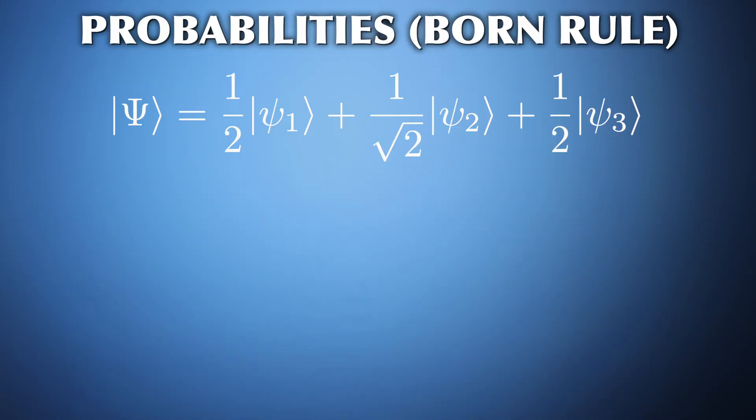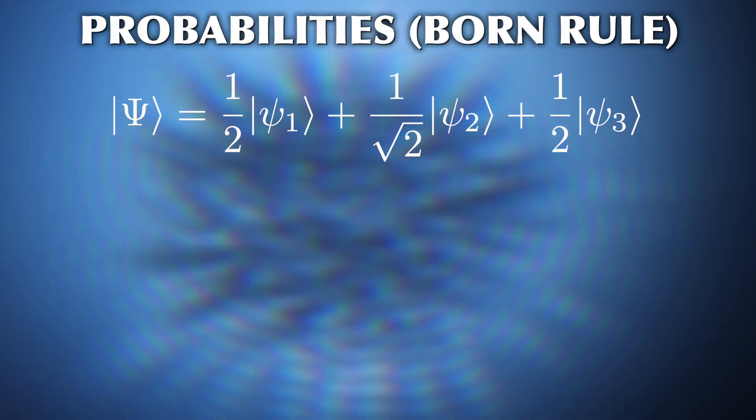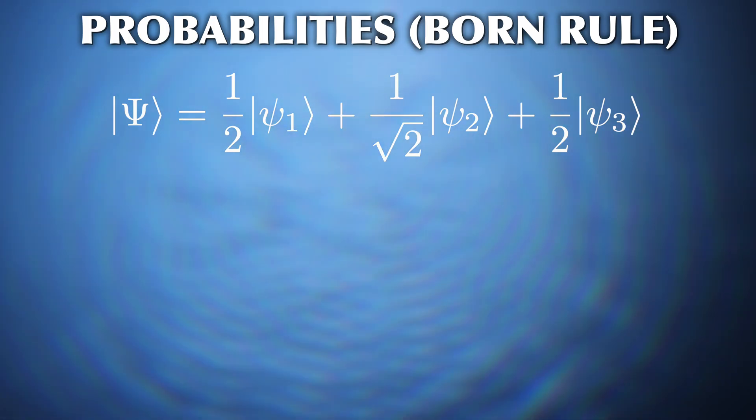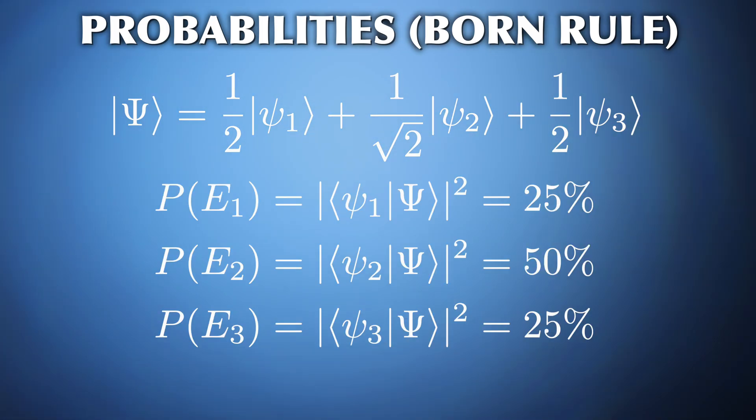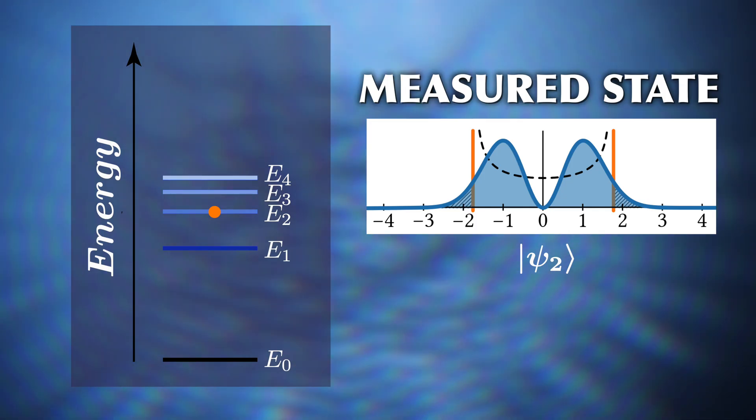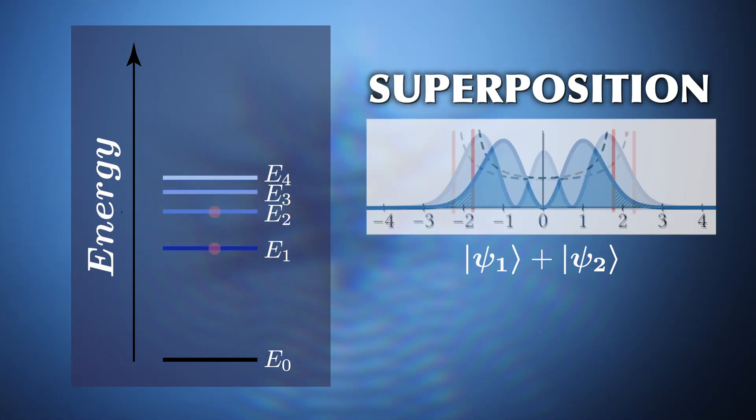Again, this is random. We cannot calculate which eigenvalue we will measure. All we can do is calculate the probability for every possible outcome by projecting the wave function onto the respective eigenstate. As for the claim that quantum objects can be in two states at once, well, in a way, we can only ever measure one state. But as long as we don't measure, the system can be in a superposition of many states.